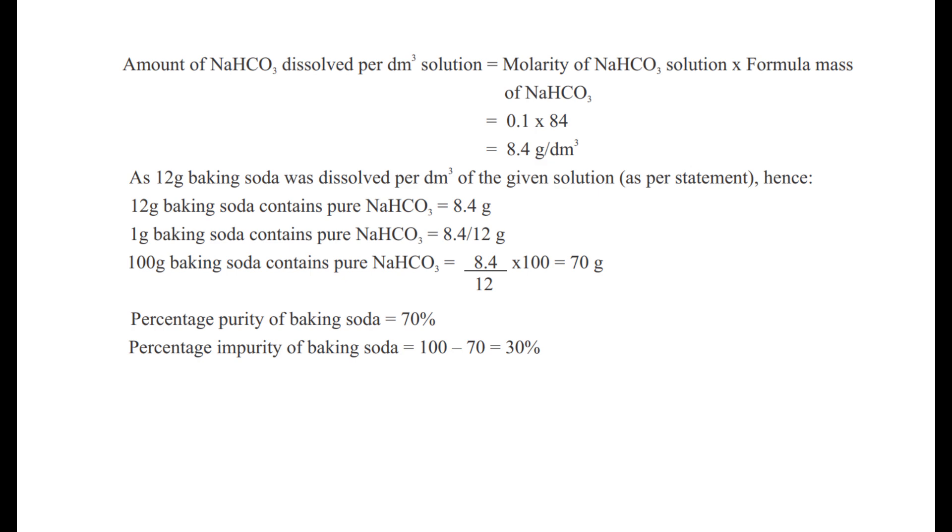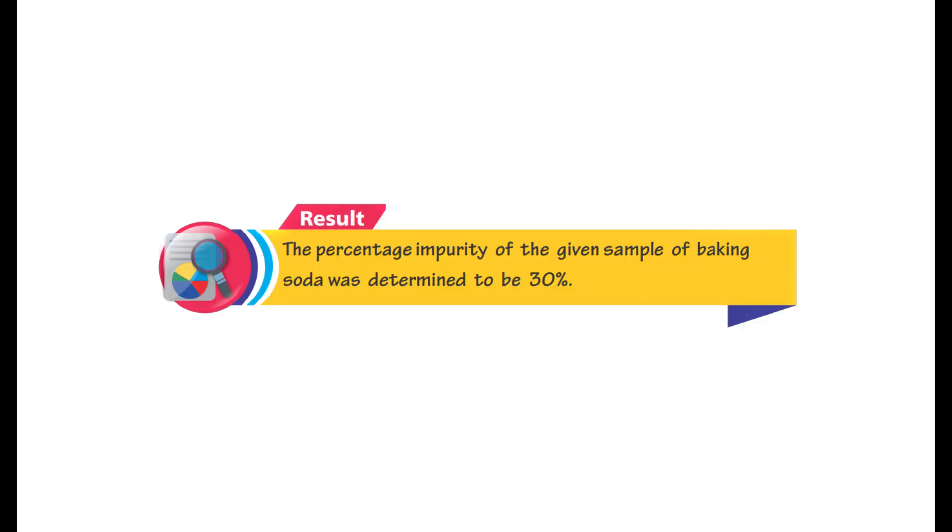Since this is mass by mass and per 100, we can write this as percent. The percentage purity is 70%. If the statement asks for percentage impurity instead of percentage purity, then percentage impurity = 100 - 70 = 30%.